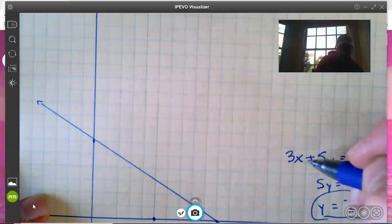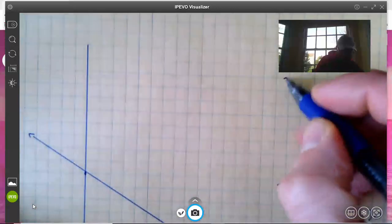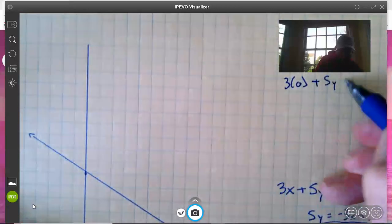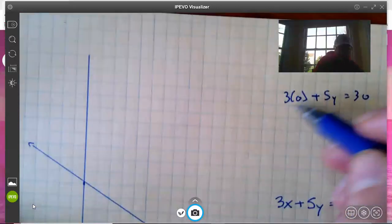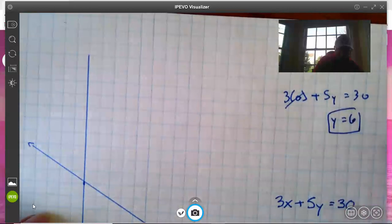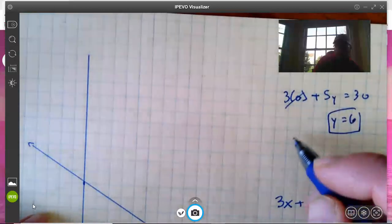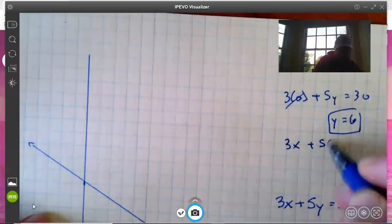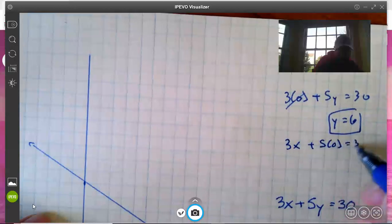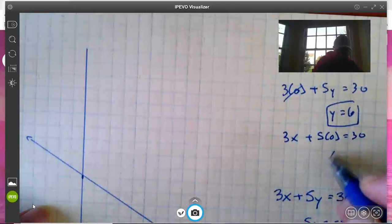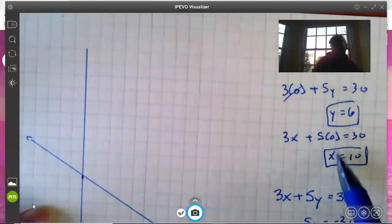I can find the y-intercept by replacing x with 0, in which case that term just goes away entirely and y equals 6. And then I can replace y with 0: 3x + 5(0) = 30. Divide by 3 on each side and we get x = 10.